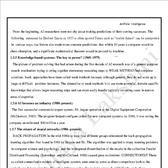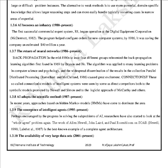Knowledge-based systems were developed from 1969 to 1979. The problem with problem-solving in the first decade of AI was the use of general-purpose search mechanisms trying to string together elemental reasoning steps — weak methods — to find complete solutions. An alternative to weak methods is to use more powerful domain-specific knowledge that allows larger reasoning steps and can more easily handle typically occurring cases in narrow areas of expertise.